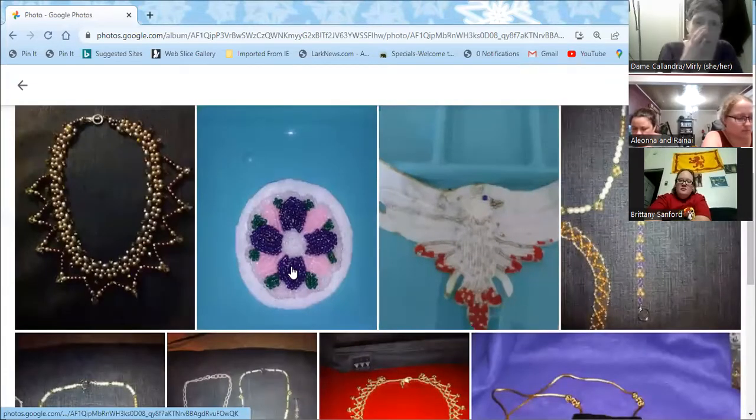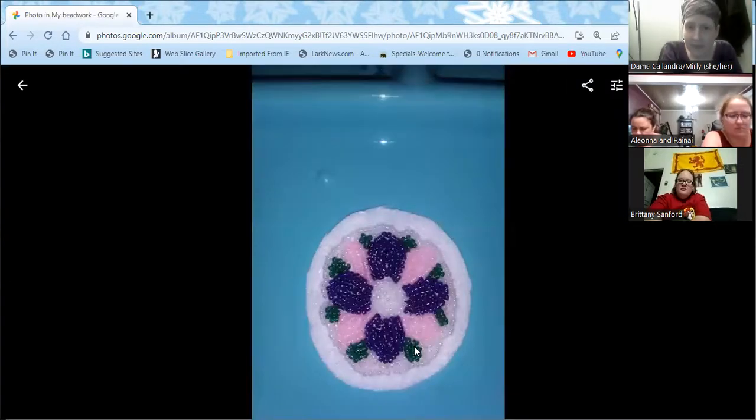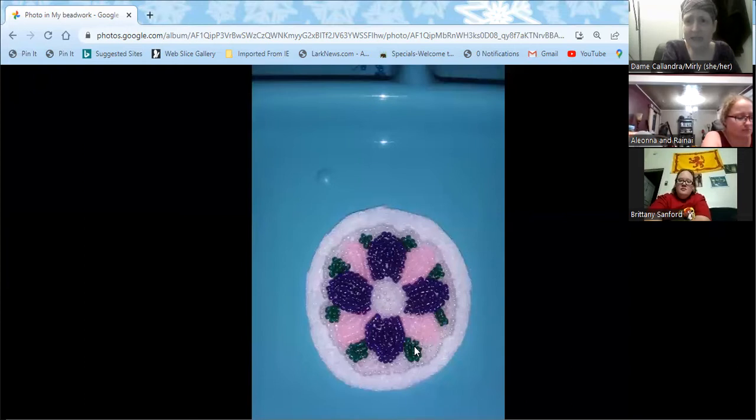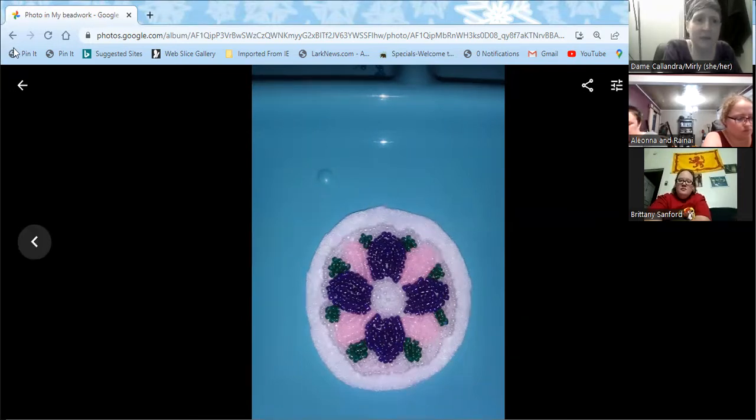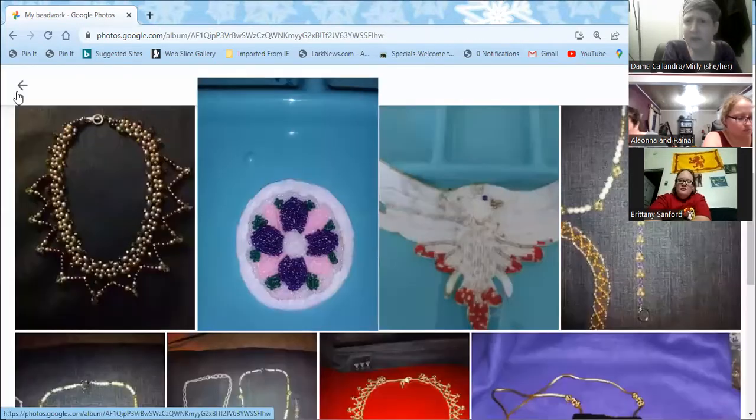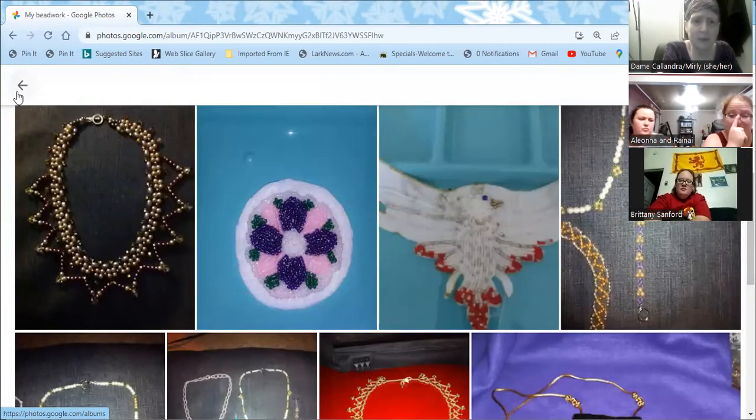This one I actually did as a challenge with an online event that was supposed to be done that day. You found out what the project was at the beginning and had to finish it by the end. This is just a little flower stitched on felt that will eventually become a brooch or necklace centerpiece. You can make things into jewelry, barrettes, or use it directly on garb.